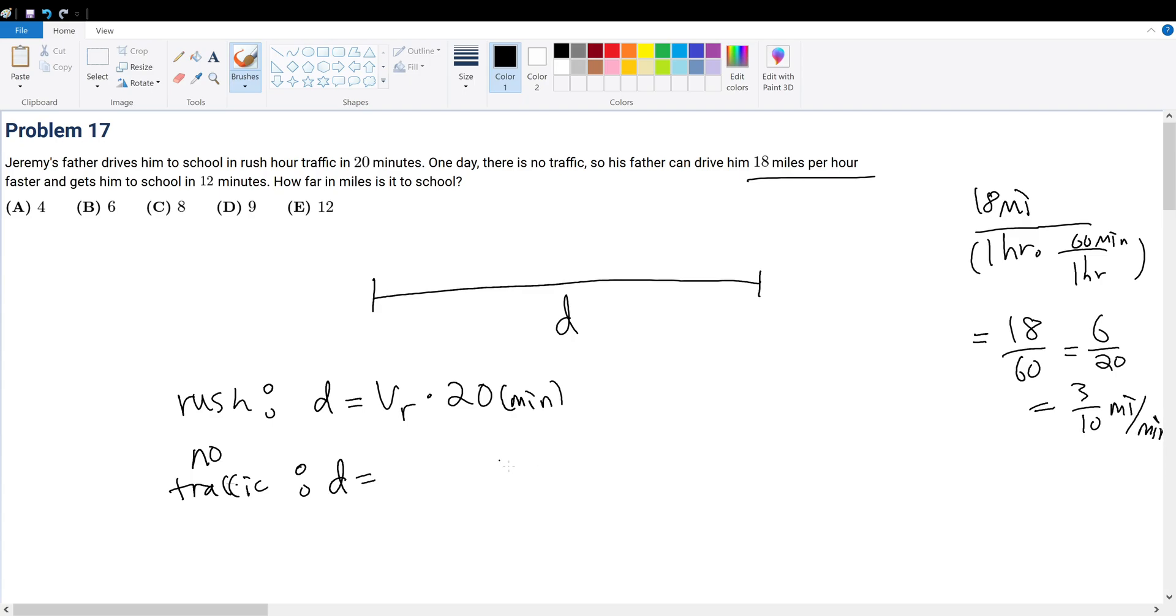So that's the amount that he goes faster. So we have D is equal to Vr, or rather 3 over 10 miles per minute faster, plus 3 over 10, in 12 minutes, so times 12.